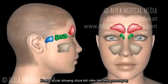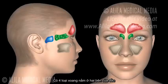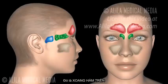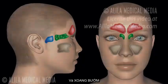Paranasal sinuses are air cavities in the bones of the skull. There are four pairs of sinuses located at either side of the head. They are the maxillary, frontal, ethmoid, and sphenoid sinuses.